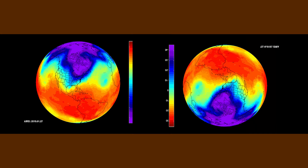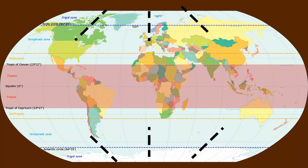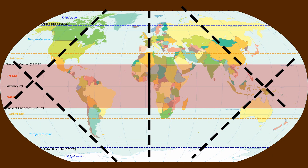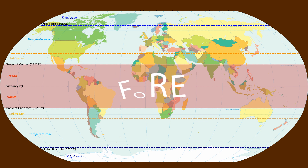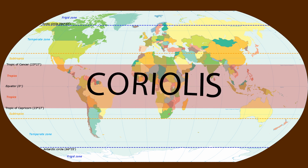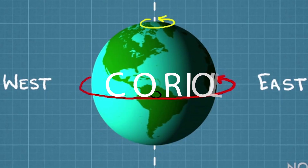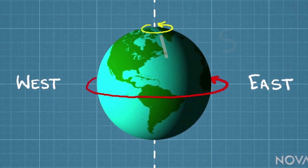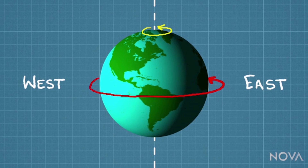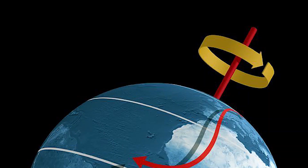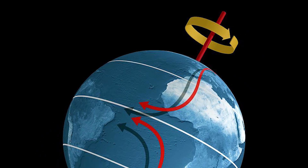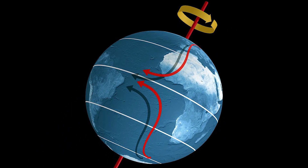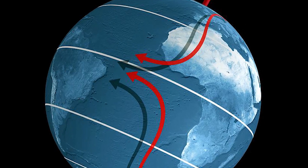Isi karan polar air, jahaan hamesha air density high hoti hai, wahaan se hawa tropical region mein bahti hai. Hawa bahte waqt ek force ko face karti hai jise hum 'Coriolis force' kehte hain. Coriolis force Earth ke gol ghumne ki wajah se tayyar hoti hai, aur wo force Earth ki rotation ki opposite bend karti hai. Isi wajah se hawa bend hona shuru kar deti hai.